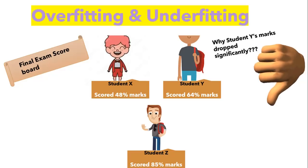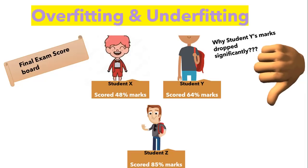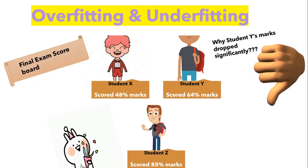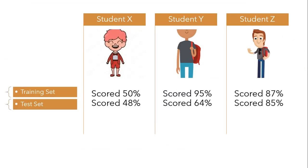Now you'll see a very interesting outcome for student Z. His marks remained more or less the same as he focused on learning the problem-solving approach instead of memorizing, and he was able to solve unknown questions as well. If you're thinking about how this relates to overfitting and underfitting, we are considering these scorecards as training and test data. The class test falls under training data and the final exam falls under test data. Bias defines how accurately our model is performing on training data, and variance tells how accurately the model is performing on test data.